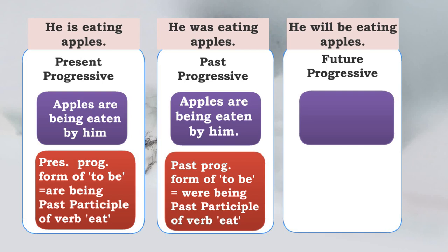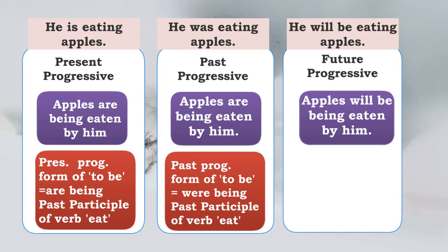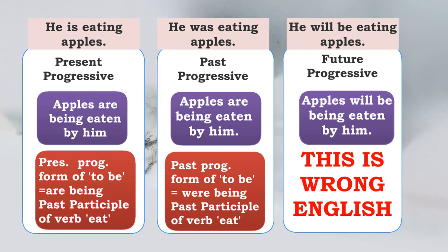Now let us look at the third one: 'He will be eating apples' — future progressive. How should the passive be? Would it be 'Apples will be being eaten by him'? Do we really speak like this? 'Will be being' — twice 'be' forms? No. This is actually wrong English, so this is something that cannot be transformed to passive voice. It is not necessary that all sentences in the active voice can or need to be transformed.